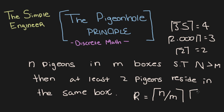So if we take the ceiling of 3 pigeons over 2 boxes, that's the ceiling of 1.5, which equals 2. This means we need at least two pigeons in the same box for this to hold true.